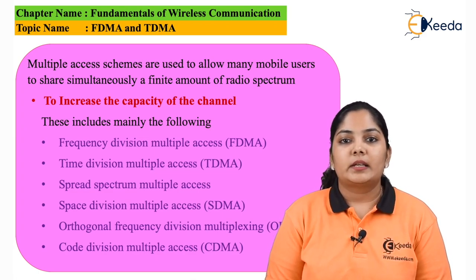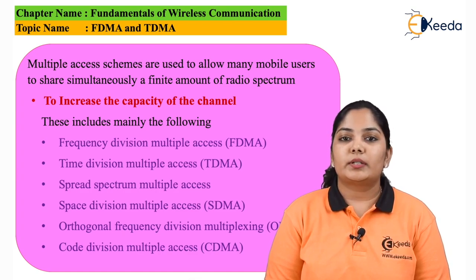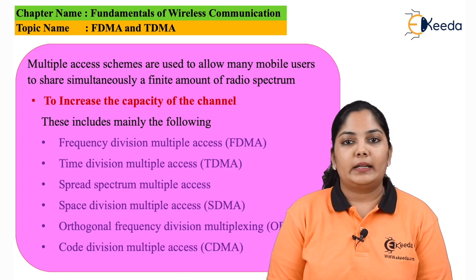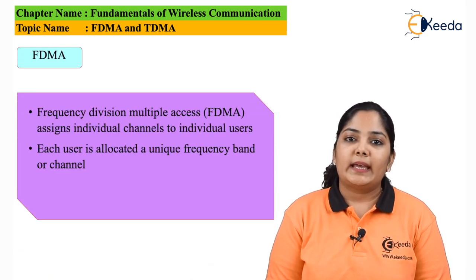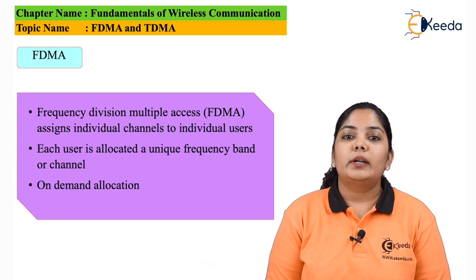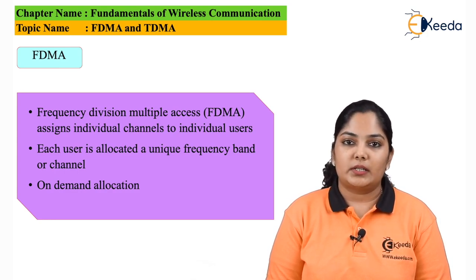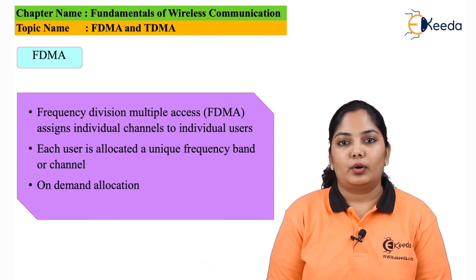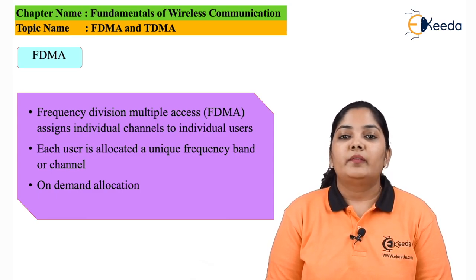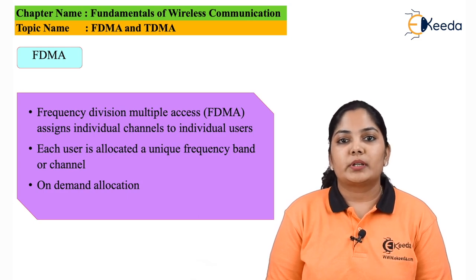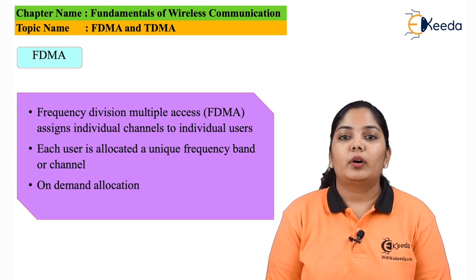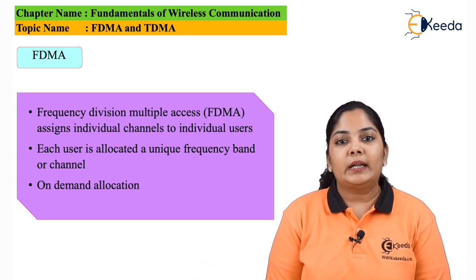One question that comes to mind is: if frequency is continuously allocated to a single user, he may not be using it for the entire time, so the frequency goes to waste. Hence, on-demand frequency allocation is done — the user requests the frequency whenever he wants to initiate a call. This way we can fit multiple users into the limited spectrum that is available.